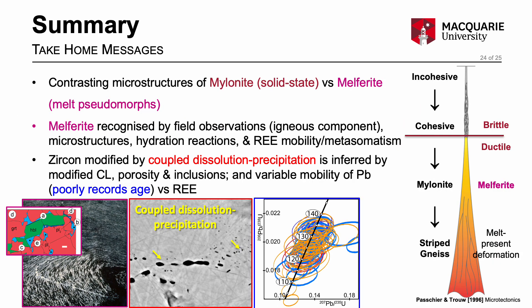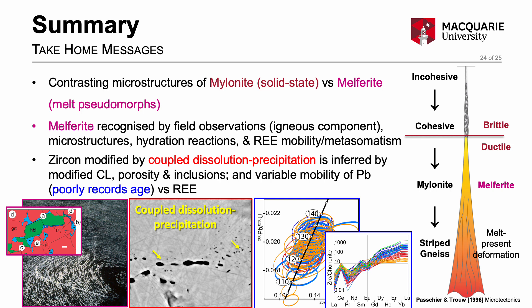The take-home messages are that mylonite and melphorite are strongly distinguished based on their characteristic microstructures. An interpretation of a melphorite high strain zone can be supported by field observation of igneous components within the high strain zone along with evidence of reactive flow and rare earth element mobility and metasomatism. Within those high strain zones, melt-zircon interaction can modify the zircon grains by coupled dissolution-precipitation, which can be inferred by observation of modified and truncated cathodoluminescence textures and preservation of porosity and epigenetic inclusions. The coupled dissolution-precipitation process variably mobilizes radiogenic lead, leading to smears of age data over a few tens of millions of years, but may be better at depleting and modifying rare earth element patterns, indicating that different trace elements have different mobilities during the process.